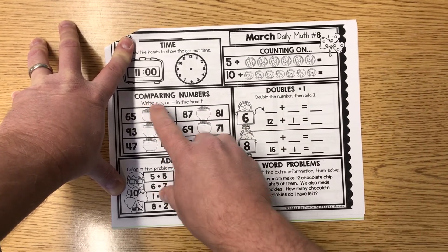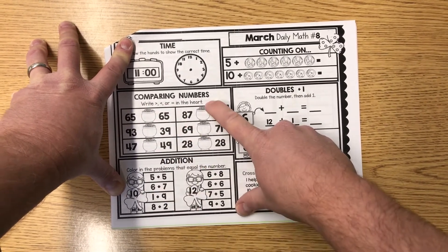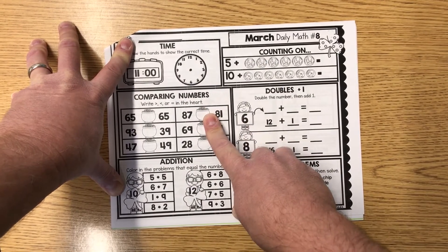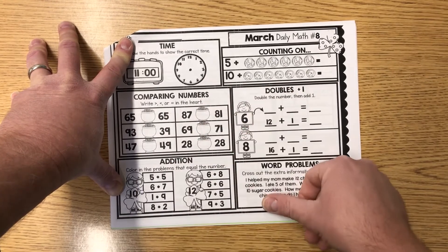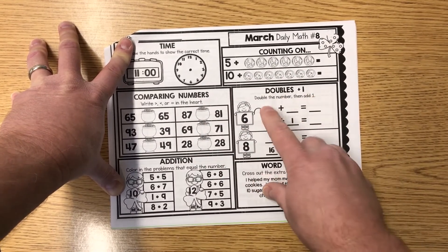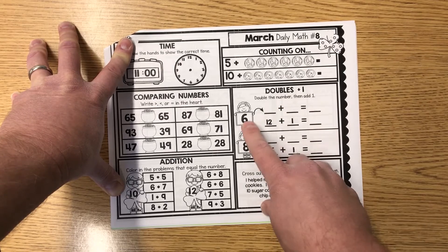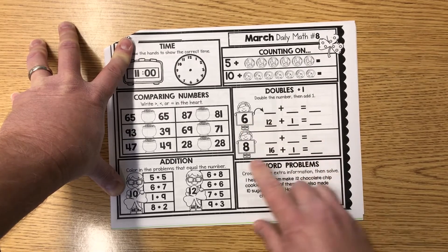Comparing numbers: write greater than, less than, or equal to. In the pot, what do you guys think? You're right, it is a pot. Doubles plus one: double the number then add one. So double the 6 you get 12, add one more. Double the 8, get 16, add one more. Write your totals in there.